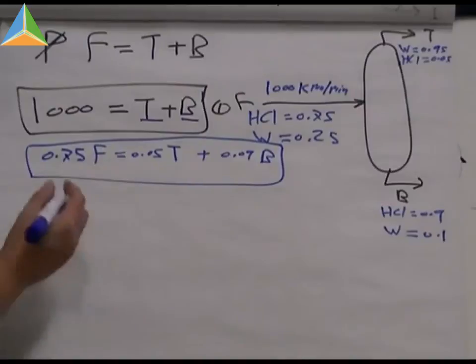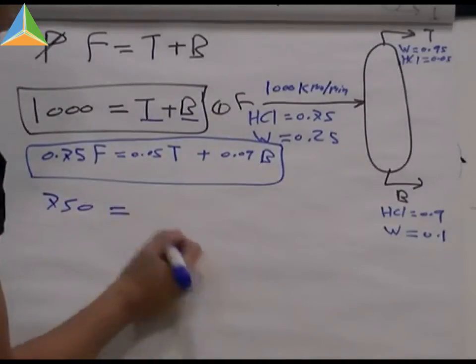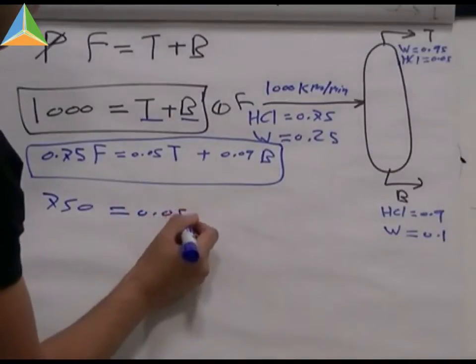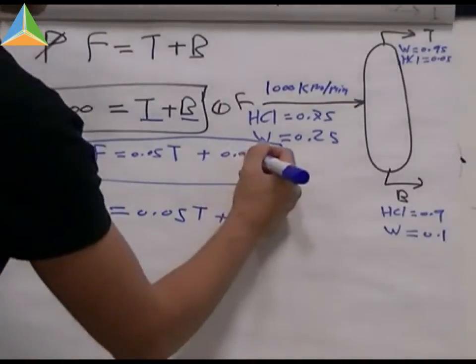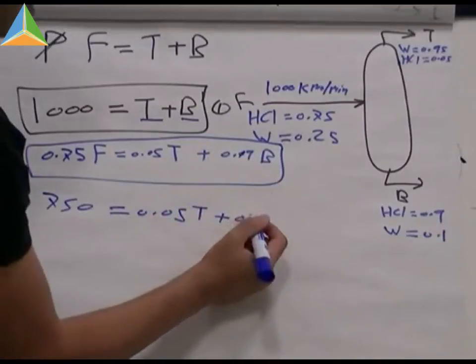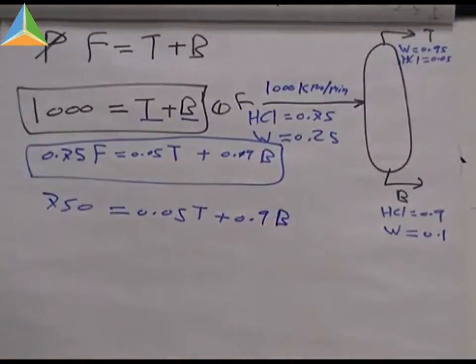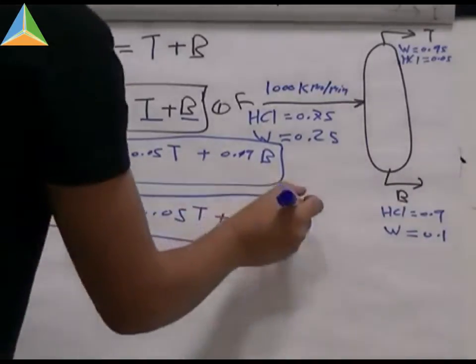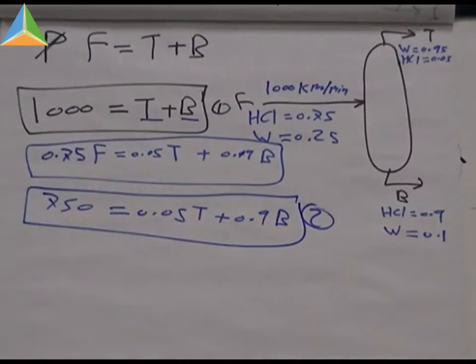So F is known. So 0.75 times 1000 equals to 0.05 times T plus 0.9 times B. This is equation number two. So now we get two variables.